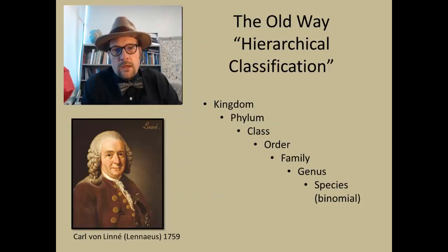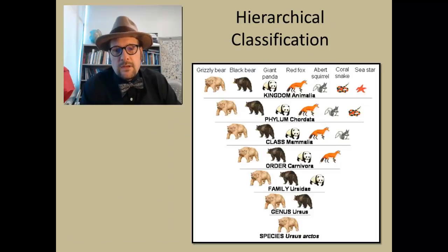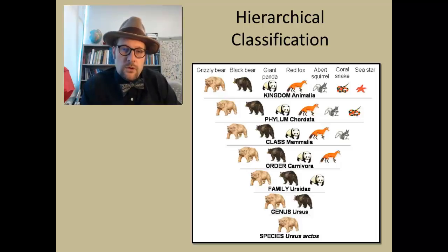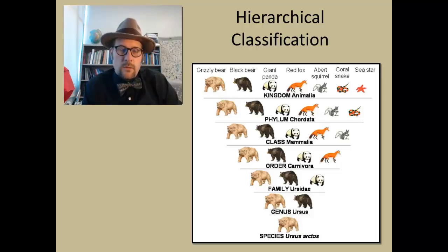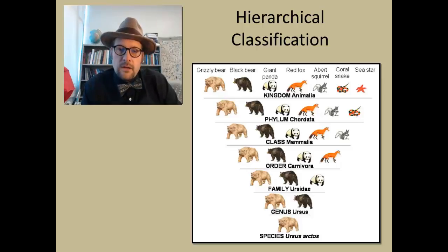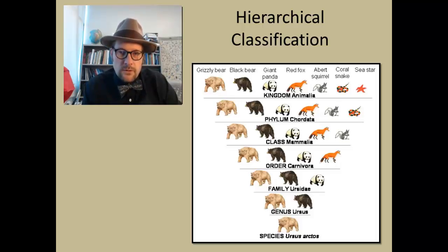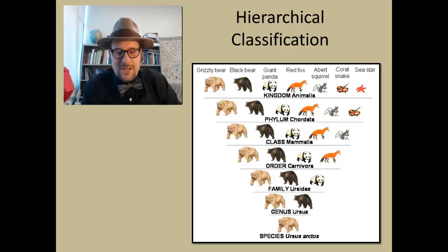Let's start with the old way in which we organized life. Ursus arctos, the grizzly bear, belongs to the genus Ursus with the black bear, the family Ursidae which also includes pandas, the order Carnivora which includes foxes, the class Mammalia which includes all mammals like squirrels, the phylum Chordata which includes all vertebrates like snakes and fish, and the kingdom Animalia which includes all animals.